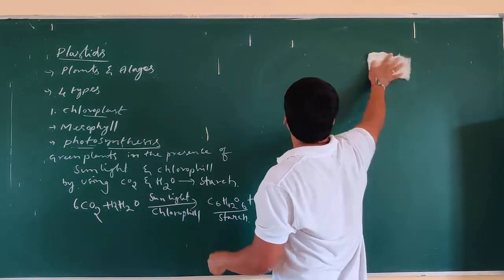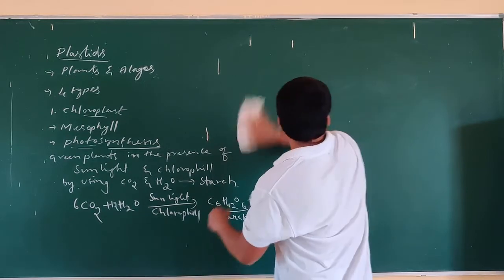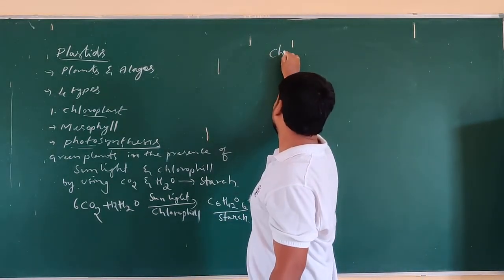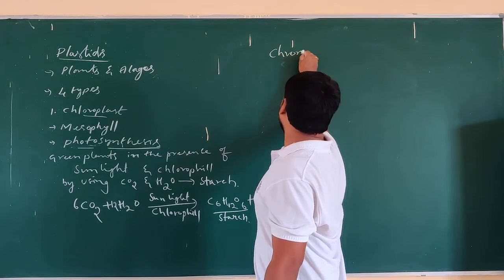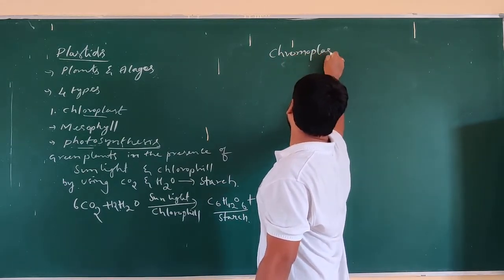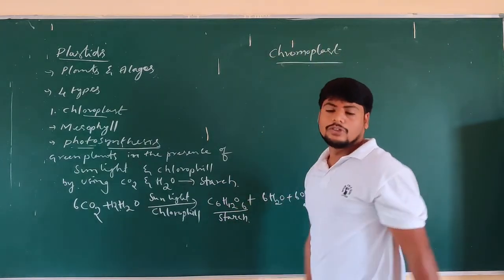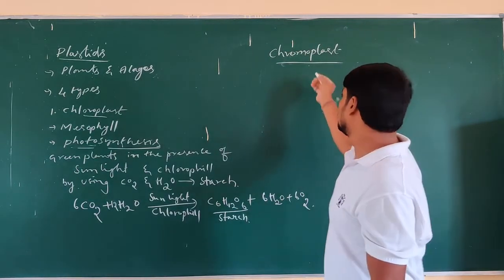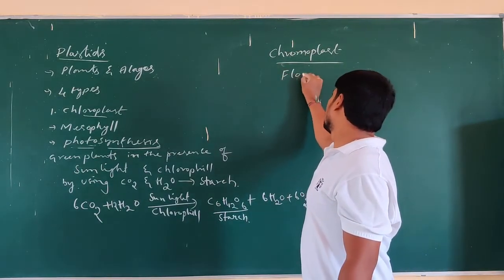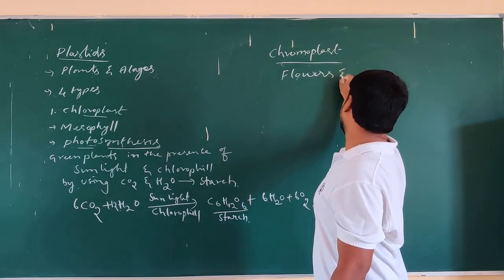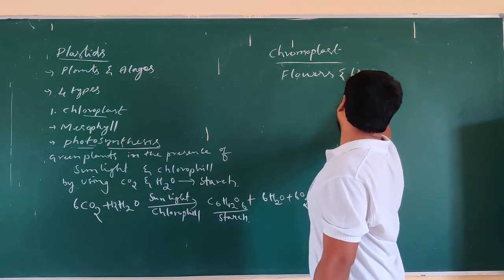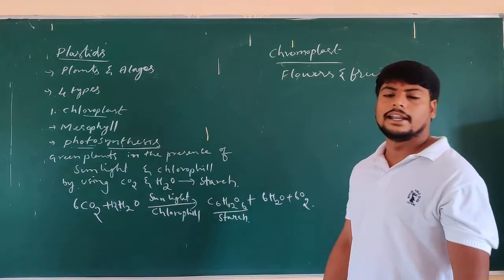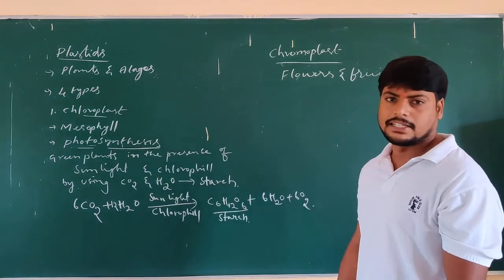Another important type is chromoplast. 'Chromo' means color, so chromoplast means color plastids. These are usually found in flowers and fruits. That is why you can see colorful flowers and fruits.